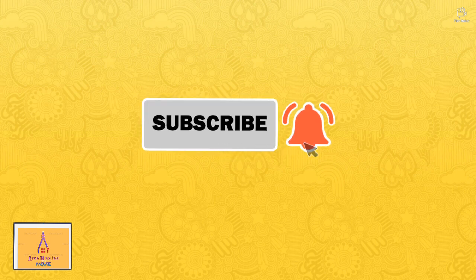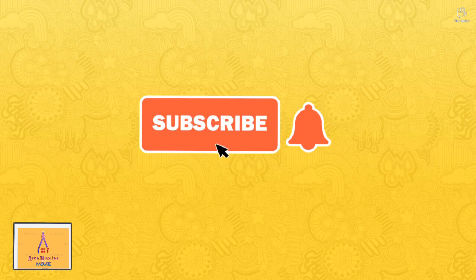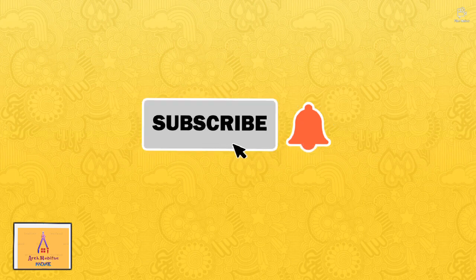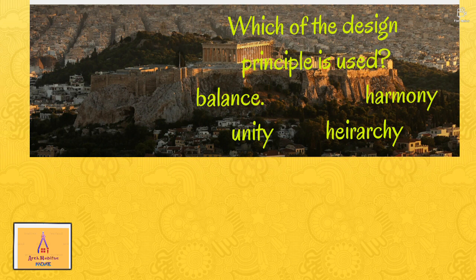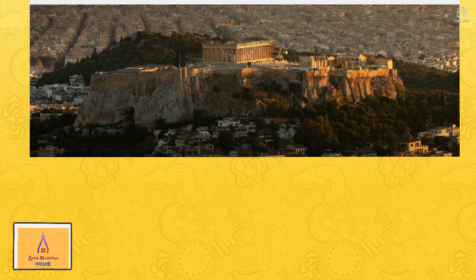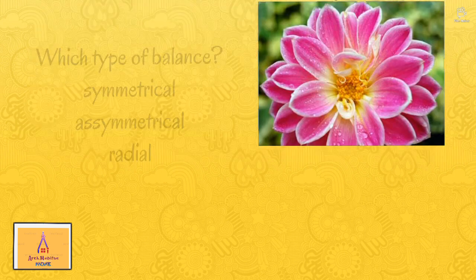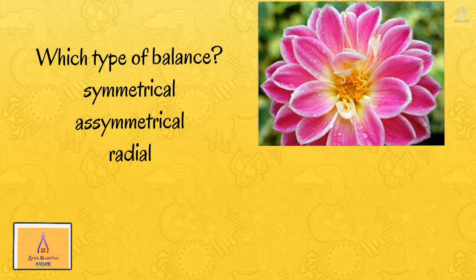Do subscribe to my channel if you have not done so far — you will get regular NATA and JEE Arch updates and also the syllabus. The next question: you may be familiar with this figure — this is the Acropolis of Athens in Greece. Which of the design principles is used? The design principle is hierarchy. Now, all those things are radiating from a central point and hence the balance is radial balance.